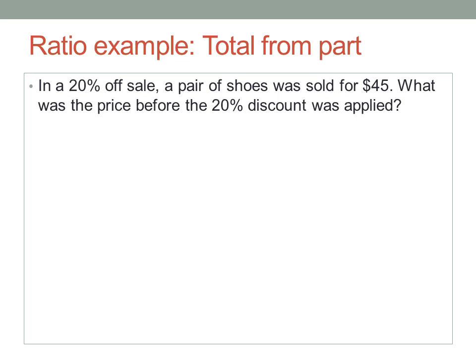Let's start with total from part. In a 20% off sale, a pair of shoes was sold for $45. What was the price before the 20% discount was applied?